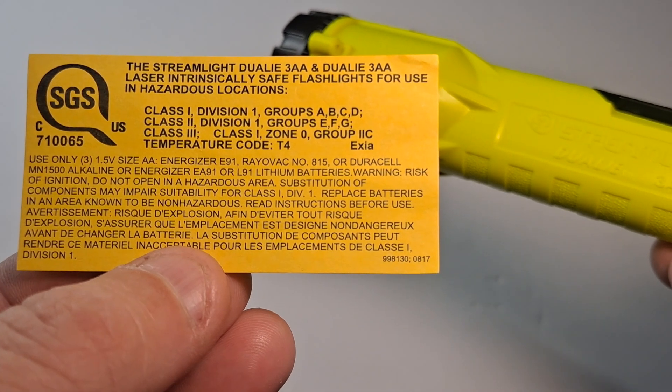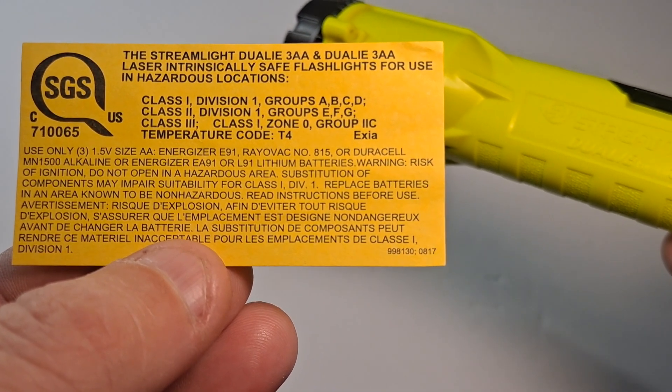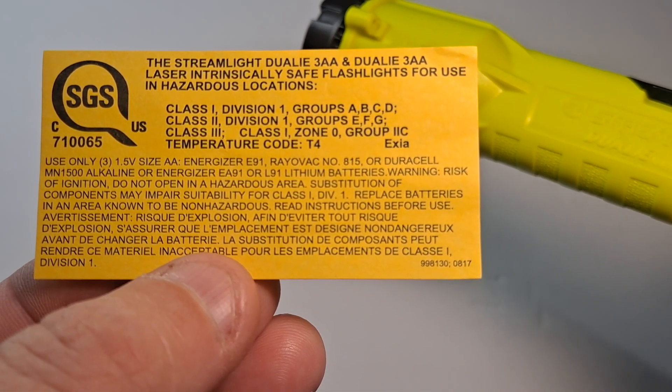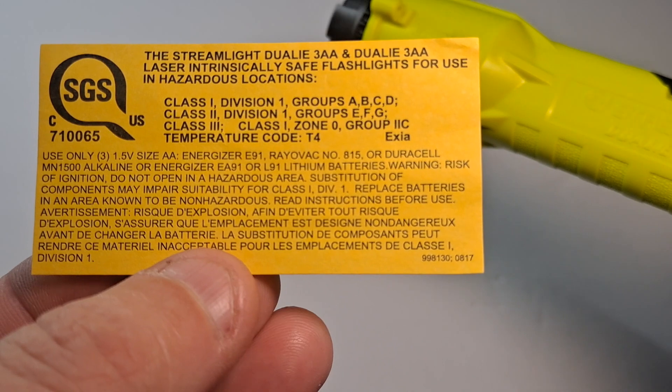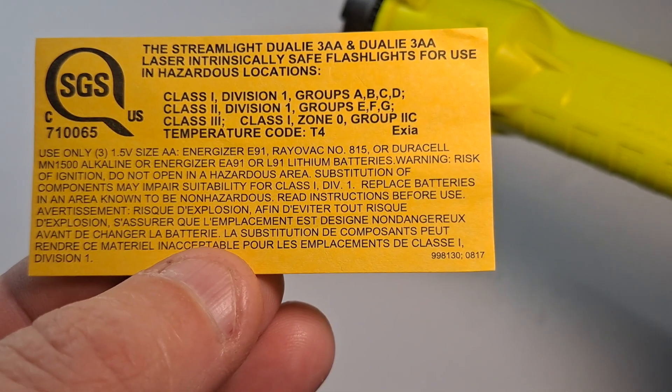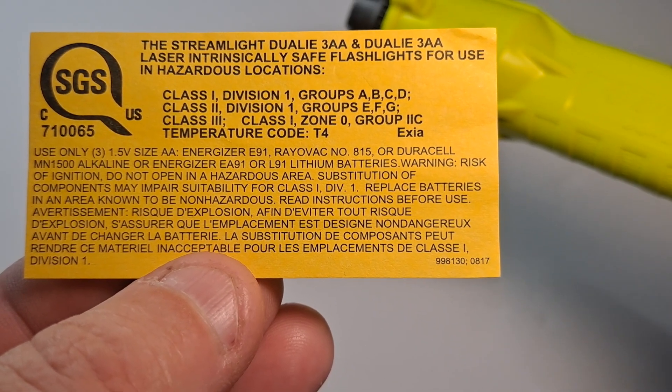Class 1 Division 1 Groups A, B, C, D. Class 2 Division 1 Groups E, F, and G. Class 3, which is that's it, there's no divisions in there. Class 1 Zone 0 Group 2C Temperature Code T4 and Exia.